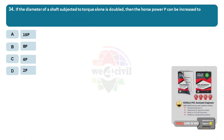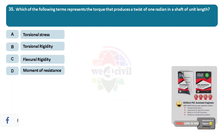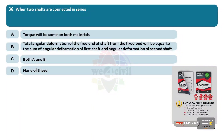Question 34: If the diameter of the shaft subjected to torque alone is doubled, then the horsepower P can be increased to? Options: A, 16P. B, 8P. C, 4P. D, 2P. Answer: Option B, 8P. Question 35: Which of the following terms represents the torque that produces a twist of one radian in a shaft of unit length? Options: A, torsional stress. B, torsional rigidity. C, flexural rigidity. D, moment of resistance. Answer: Option B, torsional rigidity. Question 36: When two shafts are connected in series. Options: A, torque will be same on both. B, total angular deformation of the free end from the fixed end will equal the sum of angular deformations of first and second shafts. C, both A and B. D, none of these. Answer: Option C, both A and B.